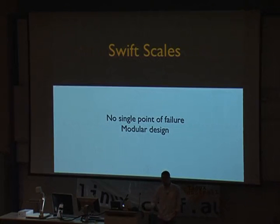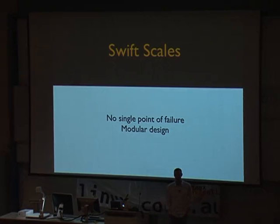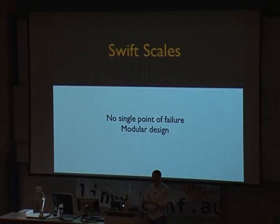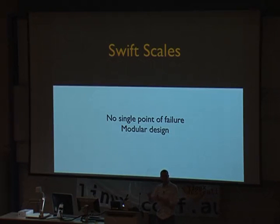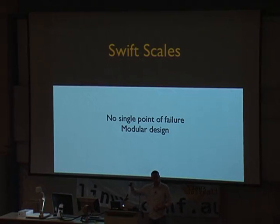First, it's built for scale. The design is that there is no single point of failure in the entire system — there's not a central metadata layer that has to be queried. Any single part of Swift can fall over and you're just fine. It's got a very modular design, and each of these pieces of Swift can be scaled horizontally as you need. If you need to add more space, add more space. If you need to add more front-end capacity for networking or connections, you can do that as well.